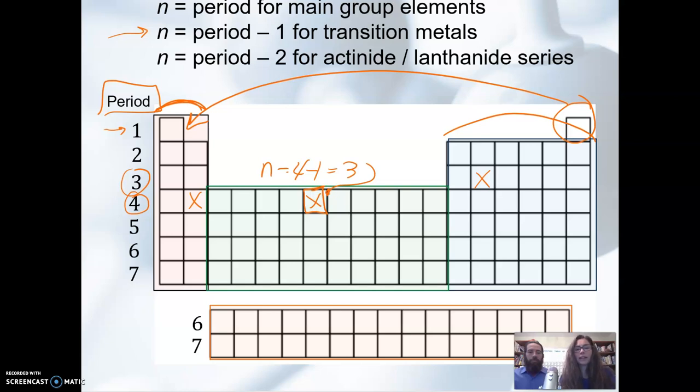Similarly, the lanthanide and actinide series, that's down here in the orange. And this entire block exists in this space right here. And if we put it in there, the periodic table would be just too wide and just too cumbersome. So we put it out and put it down below. But that doesn't change the period number. So period number six and period number seven down here. So let's say we have an element here on the periodic table, and we want to know what n is. It is period minus two. So for this one, it would be six minus two, or n equals four.